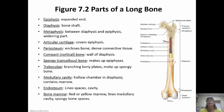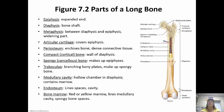A long bone can be broken down into its individual parts. The epiphysis is the expanded end — there are two, the distal and the proximal. The diaphysis is that long center shaft. The metaphysis is the part between the diaphysis and the epiphysis — basically where the shaft starts to widen out.